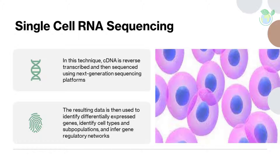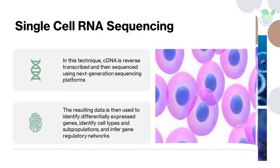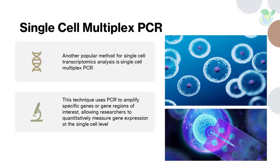One of the most popular methods for single cell transcriptomics analysis is single cell RNA sequencing, or scRNA-seq. In this technique, cDNA is reverse transcribed and then sequenced using next generation sequencing platforms. The resulting data is used to identify differentially expressed genes, identify cell types and subpopulations, infer gene regulatory networks, and figure out which genes are active and which are not.